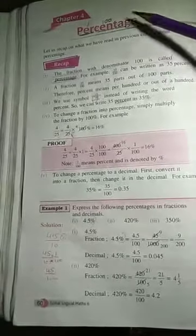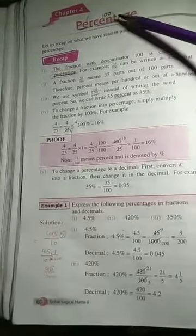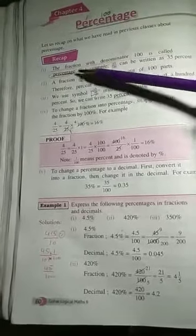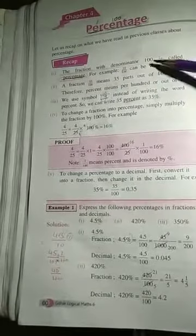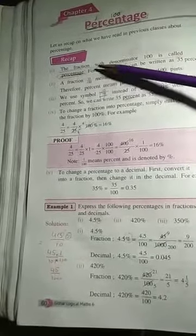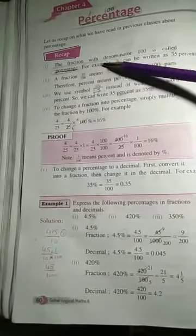The word percentage is derived from per cent. Per means one, cent means 100. So percentage means per 100. Here are a few points about percentage. Point number 1: The fraction with denominator 100 is called percentage. For example,